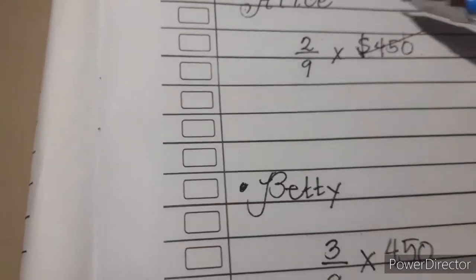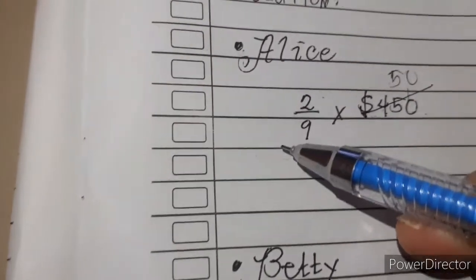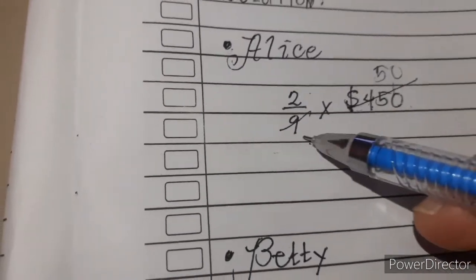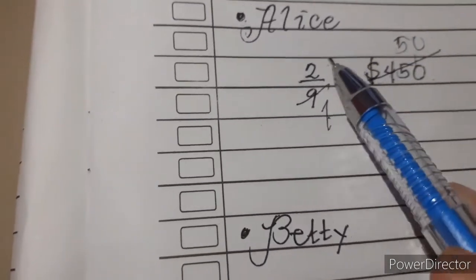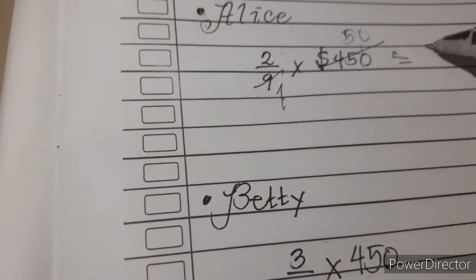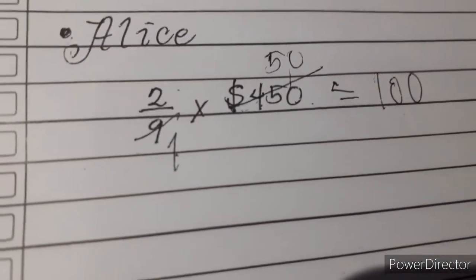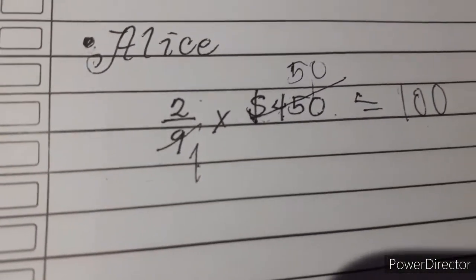$450 divided by 9 is $50, and 9 divided by 9 is 1. Now let's multiply: 2 times 50 is 100. Therefore, Alice got $100 as her allowance.